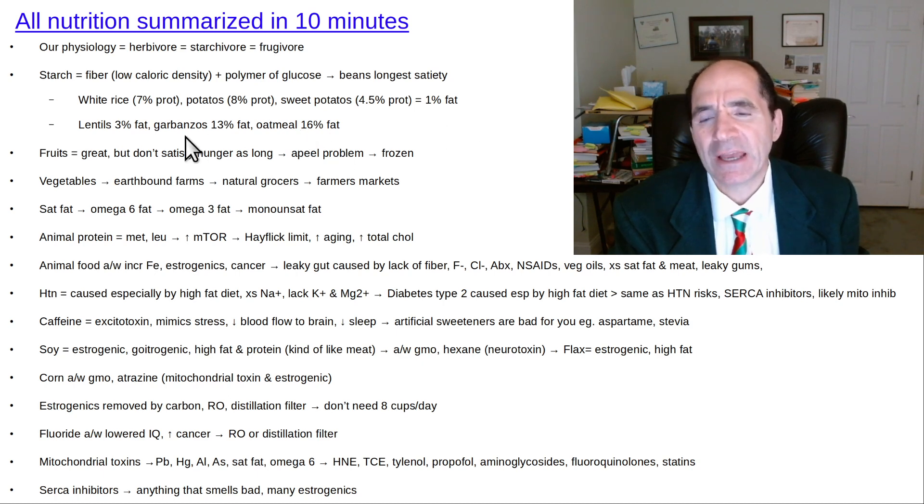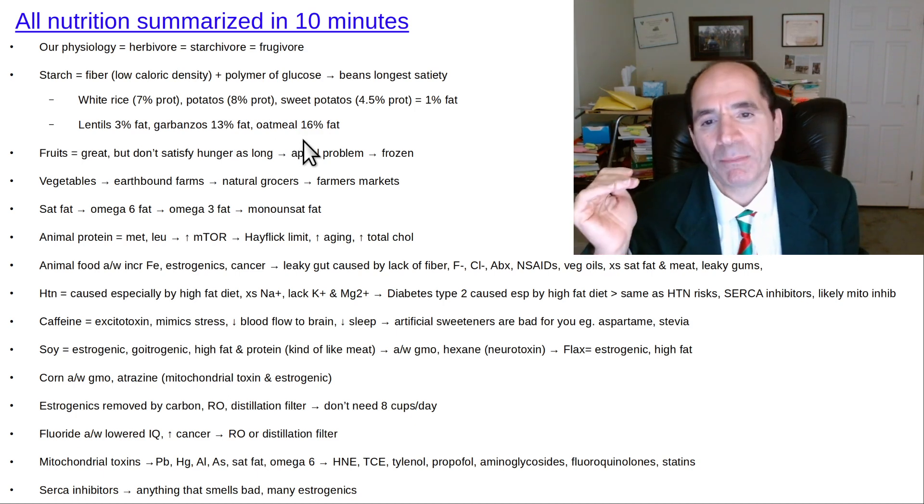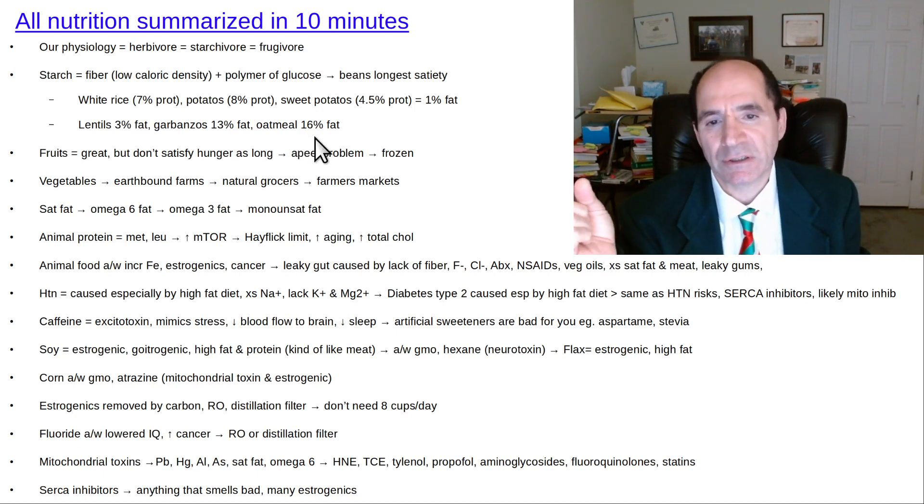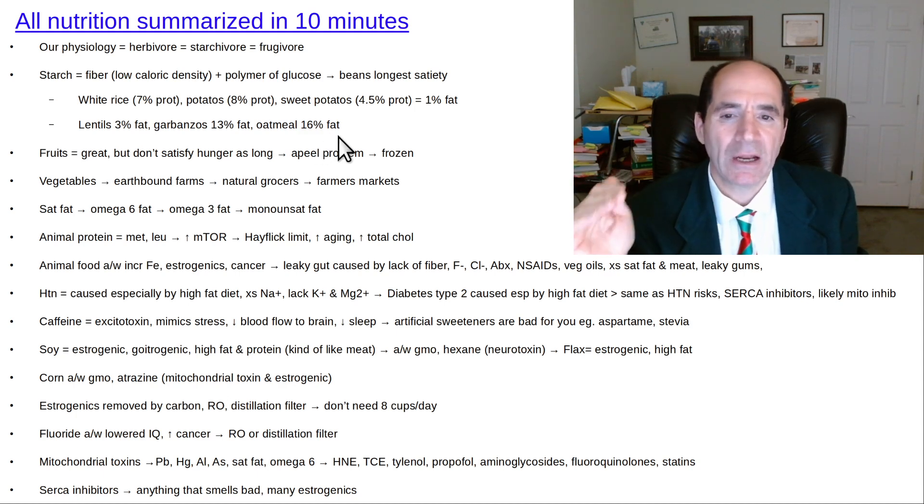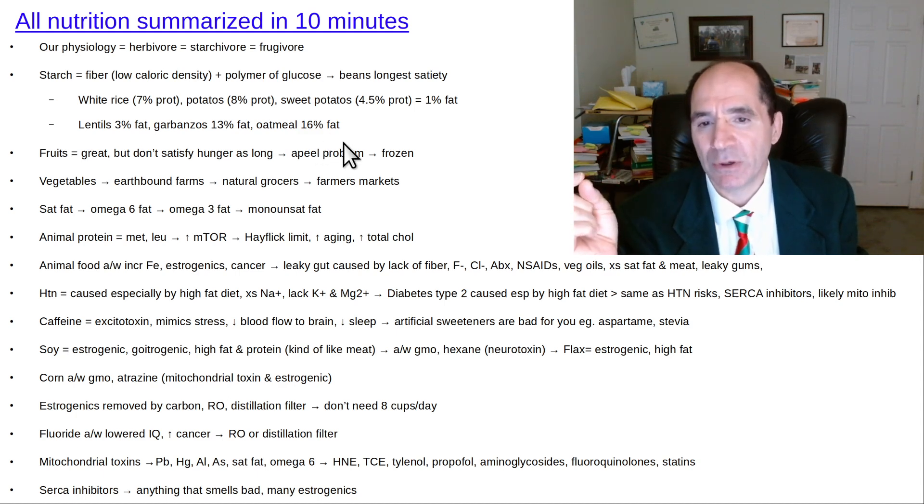As far as beans, they've got tons of fiber. They satisfy hunger for a prolonged amount of time. Lentils are one of the lowest fat beans at 3%. Garbanzos are about 13% fat. People have been interested in oatmeal lately. Oatmeal is a good food, still a little bit more fat than these other things at 16%, but for some people that works. It's good to get plain organic oatmeal just in water.